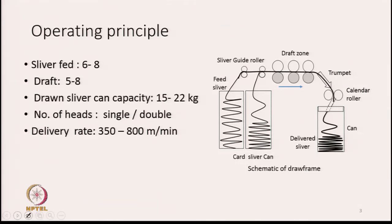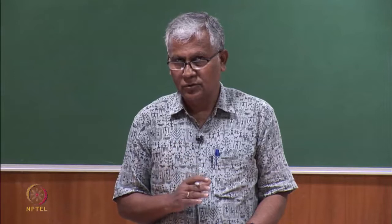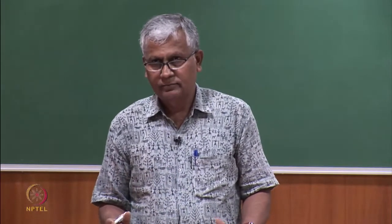The drafting zone consists of a number of rollers — we will study the draft zone in more detail in another lecture. A simple drafting zone is shown here consisting of three pairs of rollers, which means between three pairs we have two drafting zones. The zone between the front and middle pair is called the main draft zone, and the zone between the middle and the back pair of rollers is known as the break draft zone.